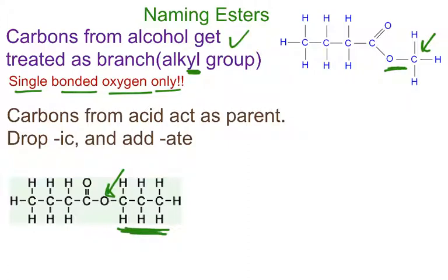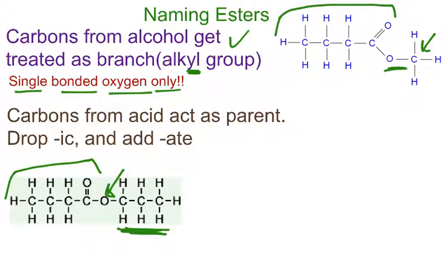So no matter how they draw the picture — I give two different representations here — those carbons came from the alcohol. The rest of the molecule came from the acid. Now we're going to follow the rules for naming the acid. The carbons from the acid — the C double-bond O and the rest of the carbons — get treated as the parent. We simply drop the -IC of the original acid name and add -ATE.